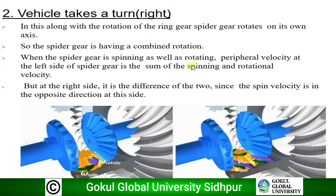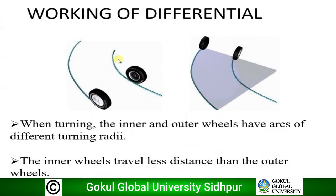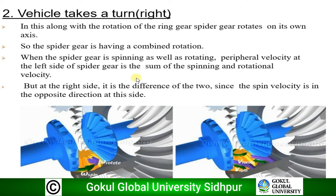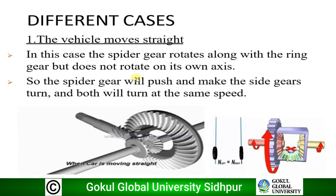Case 2: vehicle takes a right turn. Consider a vehicle taking a right turn. In this case, a certain amount of tension builds up when cornering, as the outside wheel tries to rotate quicker than the inside wheel. While taking a right turn, the outside wheel has to cover more distance compared to the inner wheel. The spider gear plays a pivotal role here — along with rotating with the ring gear, it also rotates on its own axis.